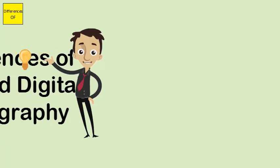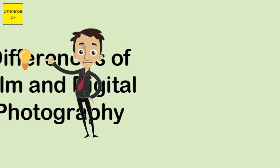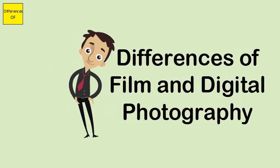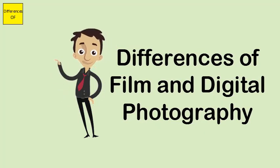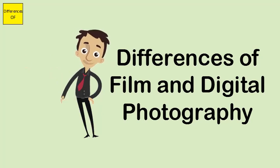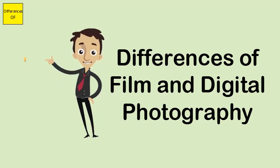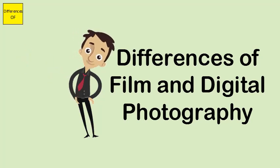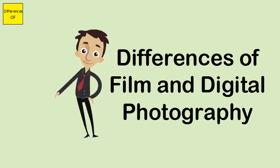Differences between film and digital photography. Traditional film photography started much earlier, while digital photography is a latest innovation. Film uses a film for capturing and storing pictures, whereas digital photography uses a digital sensor for capturing images and flash memory for storing.